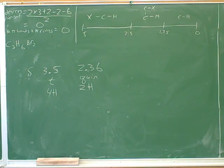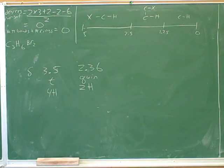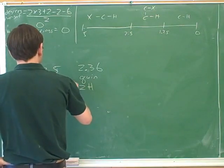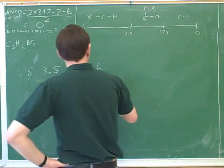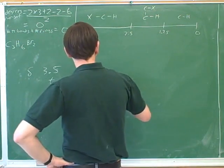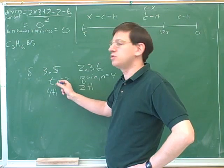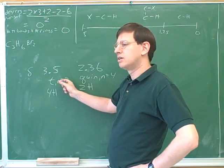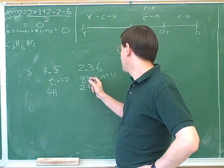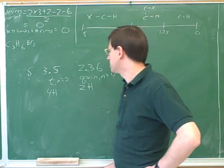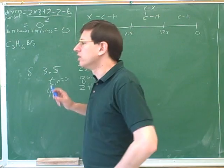And you figured out your n's based on the n plus 1 rule. If you have a triplet, there must be two adjacent hydrogens. And if you have a quintet, there must be four adjacent hydrogens.